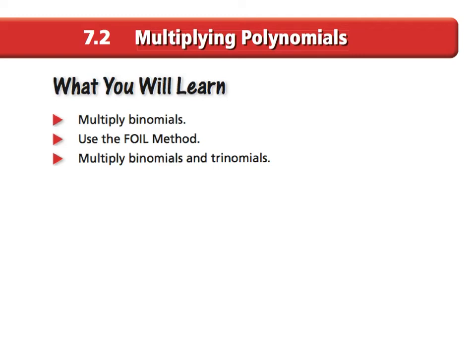In section 7.2, we're going to be multiplying polynomials — that means any monomial times a monomial, a binomial times a binomial, or a monomial times a binomial. We're going to learn three separate things: multiplying binomials, using the FOIL method, and multiplying binomials and trinomials.